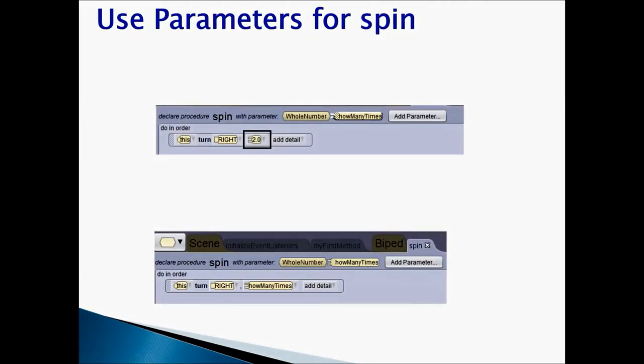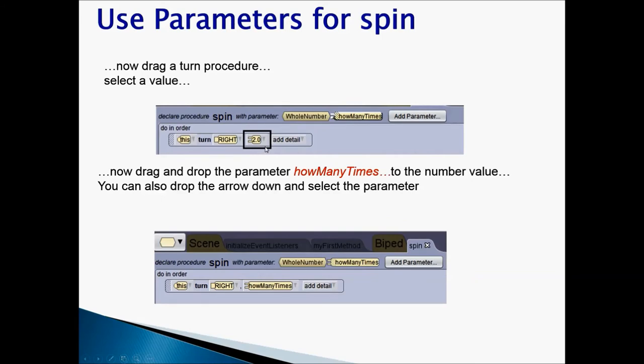How do we use parameters for procedure spin? The first thing you do is when you are in your spin procedure and you have already created how many times parameter and that's of type whole number, you would write your code for it to spin. So I'm going to drag my turn procedure and I'm going to select value 2. Now, I'm going to take my how many times parameter, I'm going to drag it from here and drop it in place of 2.